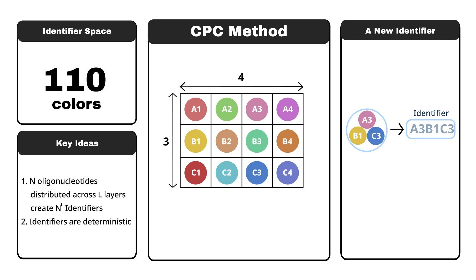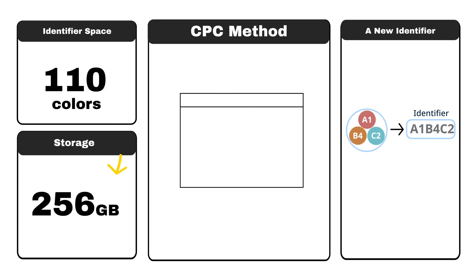With 110 colors we could store over 256 gigabytes. Reusing identifiers, we could store the entire internet.